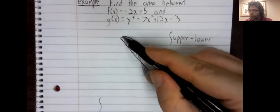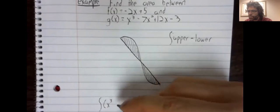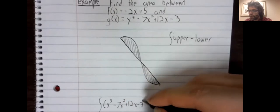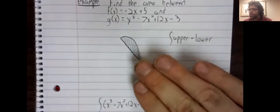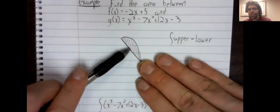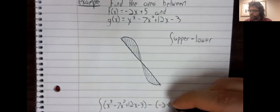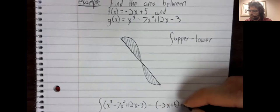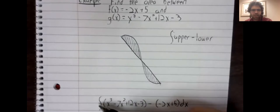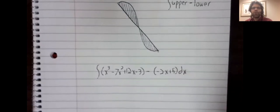So for this region, the upper curve is the cubic. The lower curve is this straight line. We are obviously missing something. We need limits of integration. Let's put those aside momentarily.